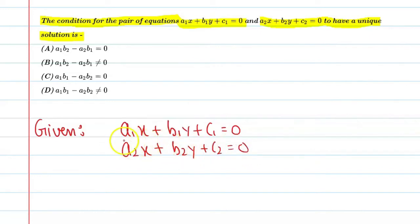All right, here in the first equation, a1 is a coefficient of x, b1 is a coefficient of y, and c1 is a constant number. Similarly, in the second equation, a2 is a coefficient of x, b2 is a coefficient of y, and c2 is a constant number in the second equation.